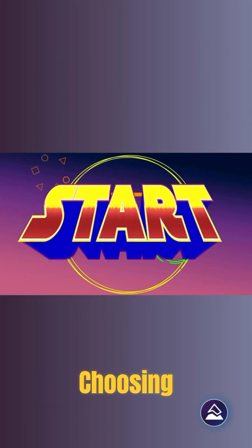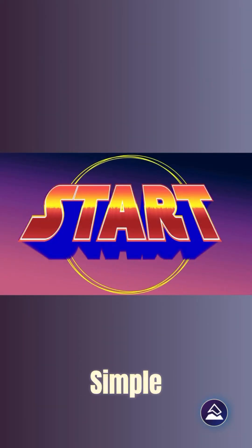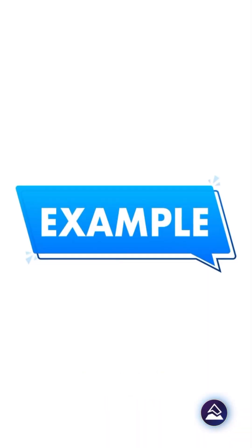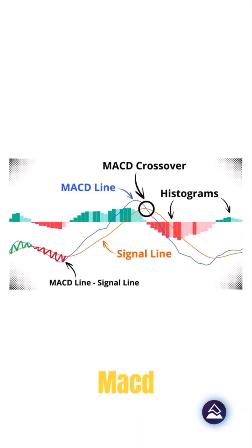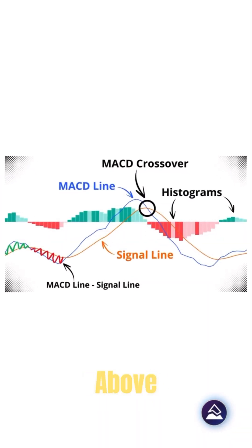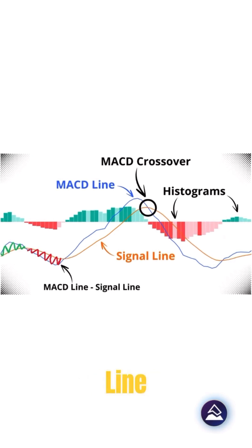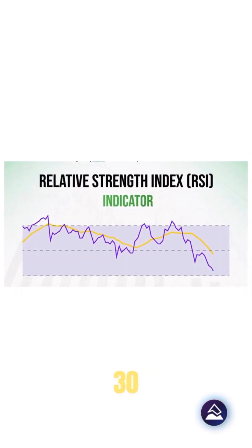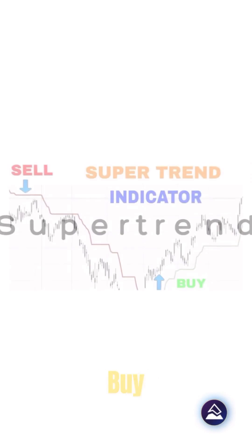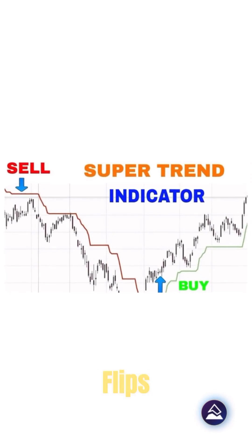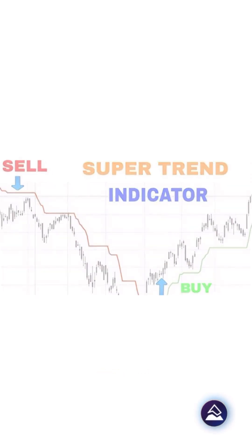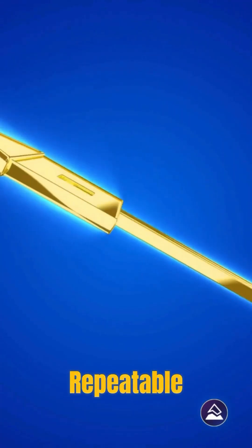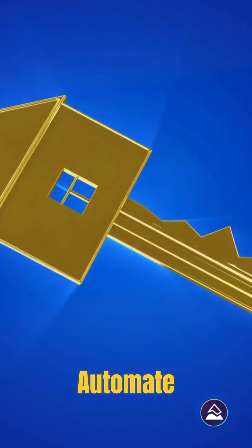Start by choosing an indicator with simple, well-known signals. For example: MACD — buy when the MACD line crosses above the signal line. RSI — buy when RSI goes below 30. Supertrend — buy when the trend flips green. The key is to use indicators that give repeatable, rule-based signals you can automate.